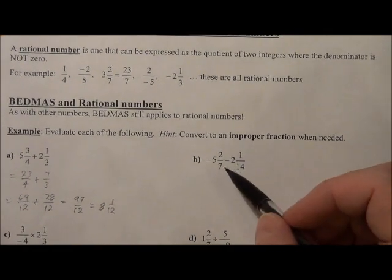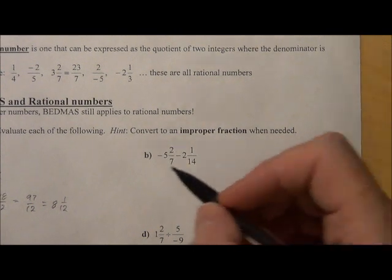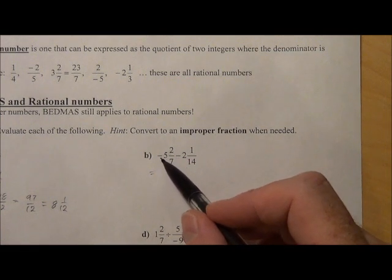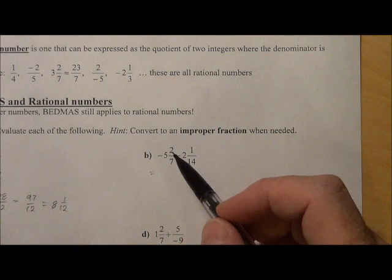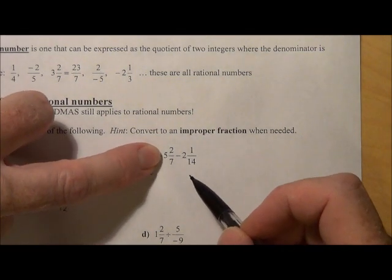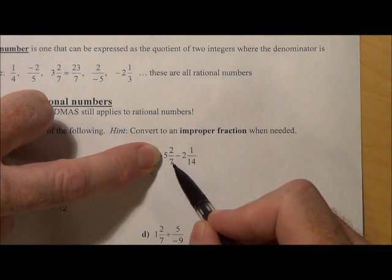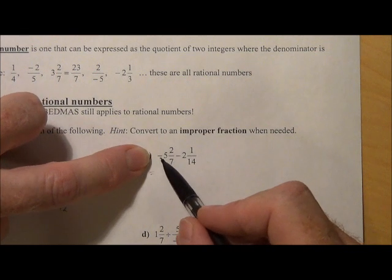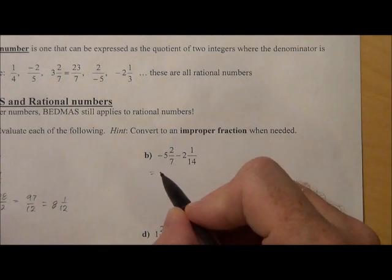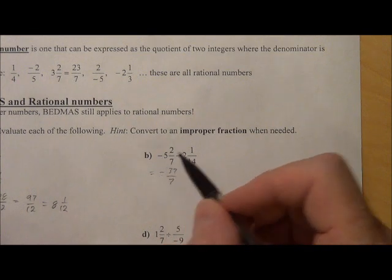Part B, we're changing the mixed number of negative 5 and 2 sevenths into an improper fraction. Now remember, when we change mixed numbers that are negative into improper fractions, forget about the negative at first. Just leave that alone. We're going to multiply 5 times 7, add 2, and then stick the negative back on there when it's all said and done. So 5 times 7 is 35, plus 2 is 37. So we get 37 sevenths negative. Please don't forget the negative sign.